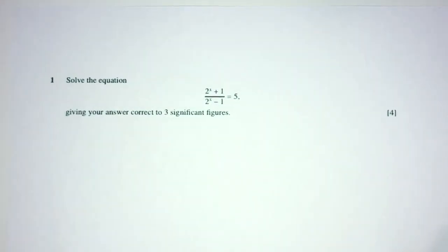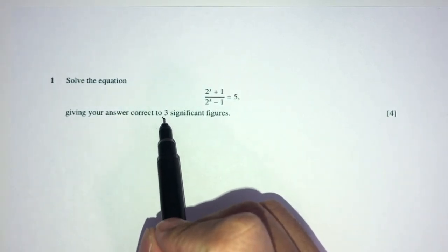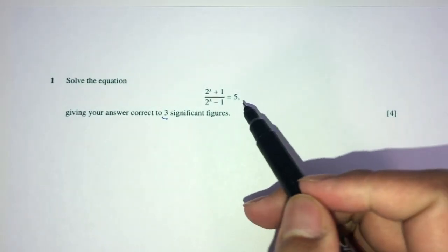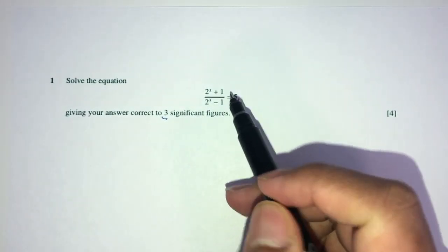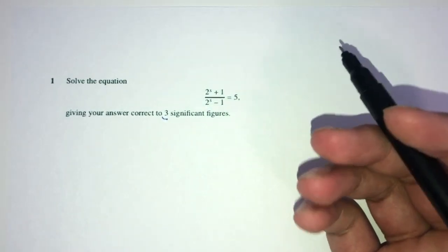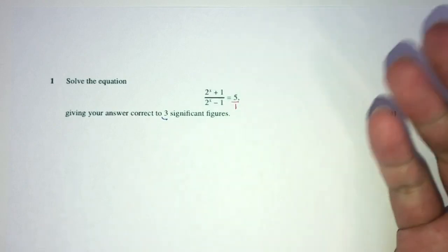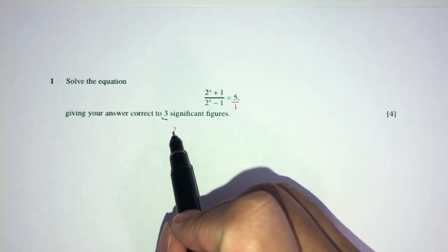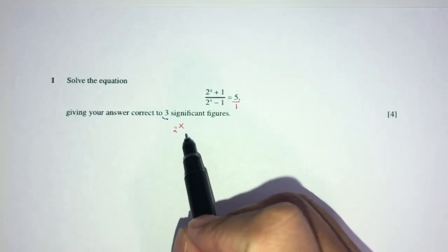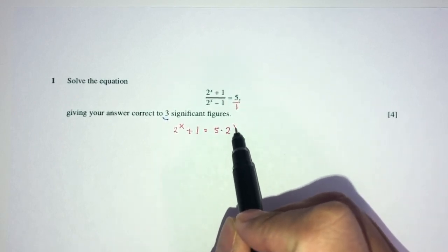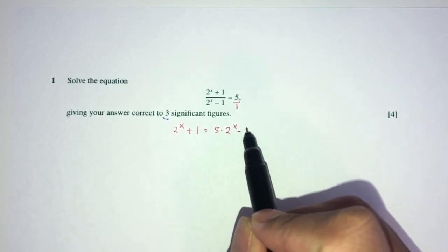So here we have to solve the equation — obviously means to find the value of x. Give your answer correct to 3 significant figures. So we have this over this equal to 5. What's the first thing we can do? Well, 5 is obviously 5 over 1, so we can cross multiply. You will have 2 to this power plus 1, equal to 5 times 2 to this power minus 5.